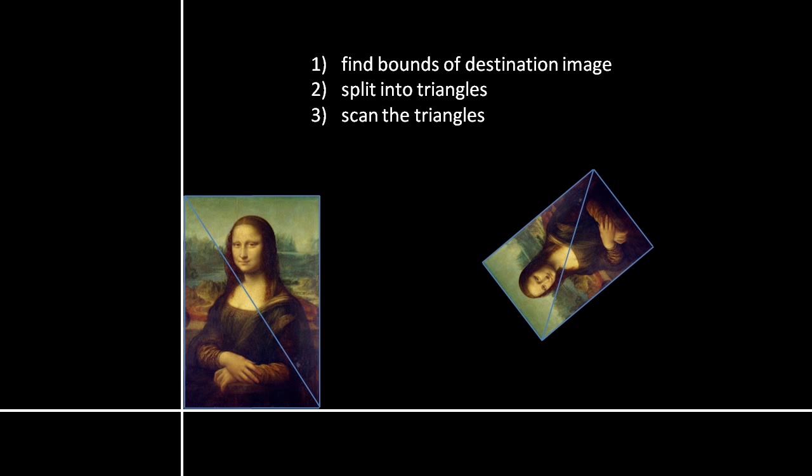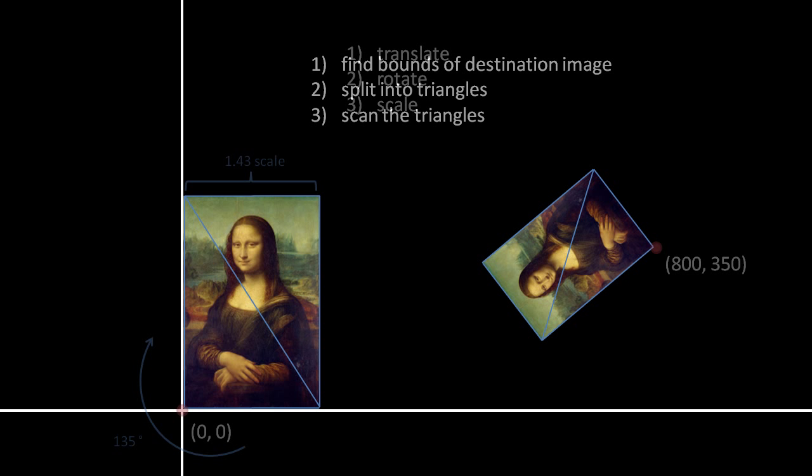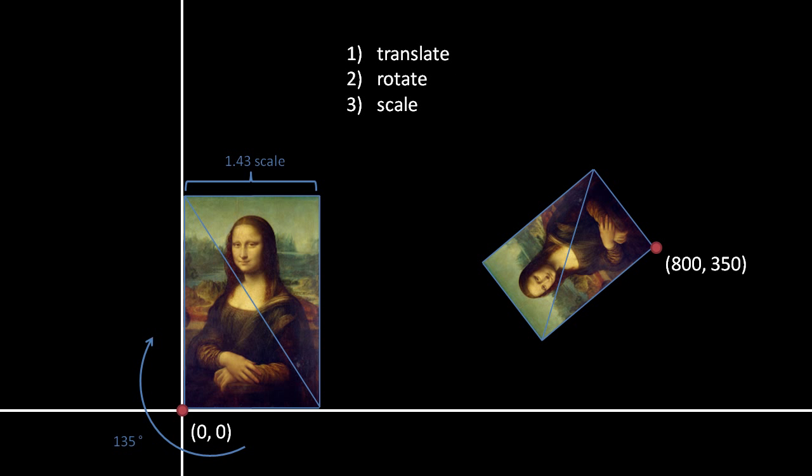The first step is to find the bounds of our destination image by simply transforming the four corners of our source image. Then, to find the pixels that lie inside the destination rectangle, the simplest solution is to split the rectangle into two triangles and scan them using the same method we saw in an earlier video. In scanning the triangles, we get the coordinates for each destination pixel, from each of which we can find a corresponding source pixel by reversing the transformation — first the reverse translation, then the reverse rotation, and lastly the reverse scaling. Once we have the source coordinate, we can get the color value using nearest neighbor or bilinear filtering.